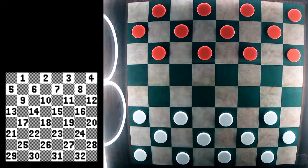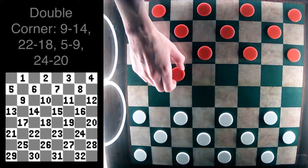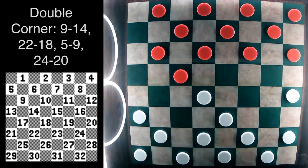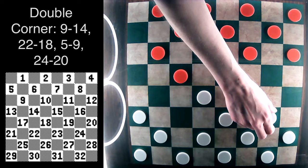There are a number of ways the position can be reached. Probably the most common is through unrestricted play with the double corner opening of 9-14, 22-18, 5-9 and 24-20.